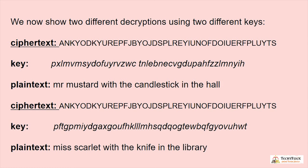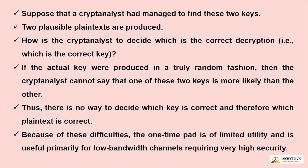The same cipher text, decrypted with another key, yields a different plain text: 'Miss Scarlet with a knife in the library.' Suppose a cryptanalyst managed to find these two keys — two plausible plain texts are produced. How is the cryptanalyst to decide which is the correct decryption, that is, which is the correct key? If the actual key was produced in a truly random fashion, the cryptanalyst cannot say one key is more likely than the other, so there is no way to decide which plain text is correct.